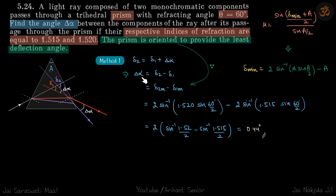So delta alpha is difference of net deviation of each of the rays. So because the prism is oriented to provide least deflection angle, the delta one and delta two are delta one minimum and delta two minimum. So we will write this as delta two minimum minus delta one minimum.